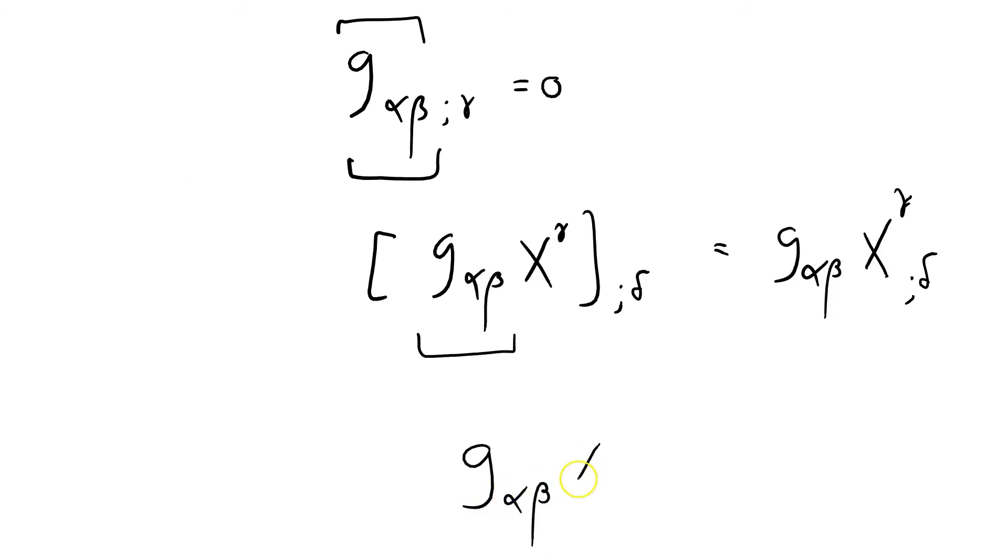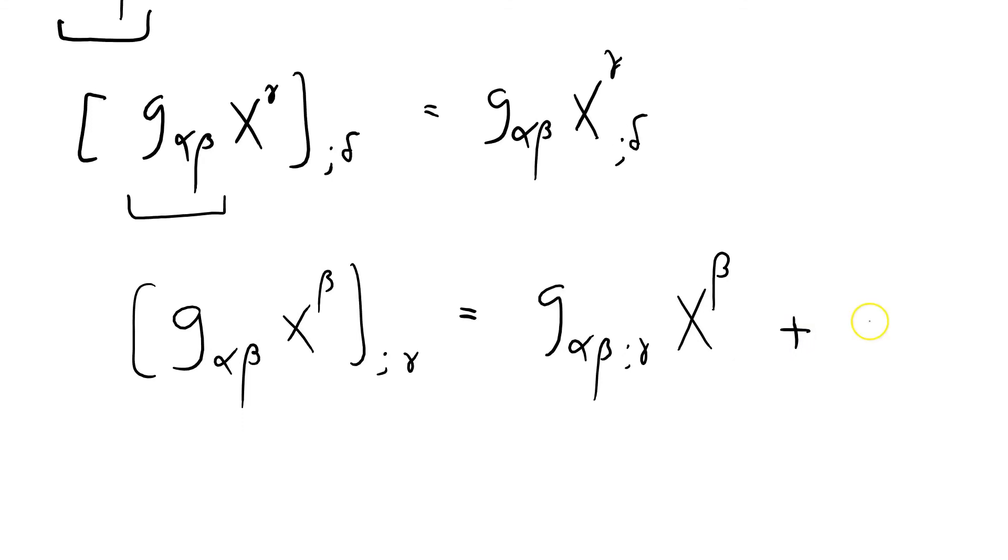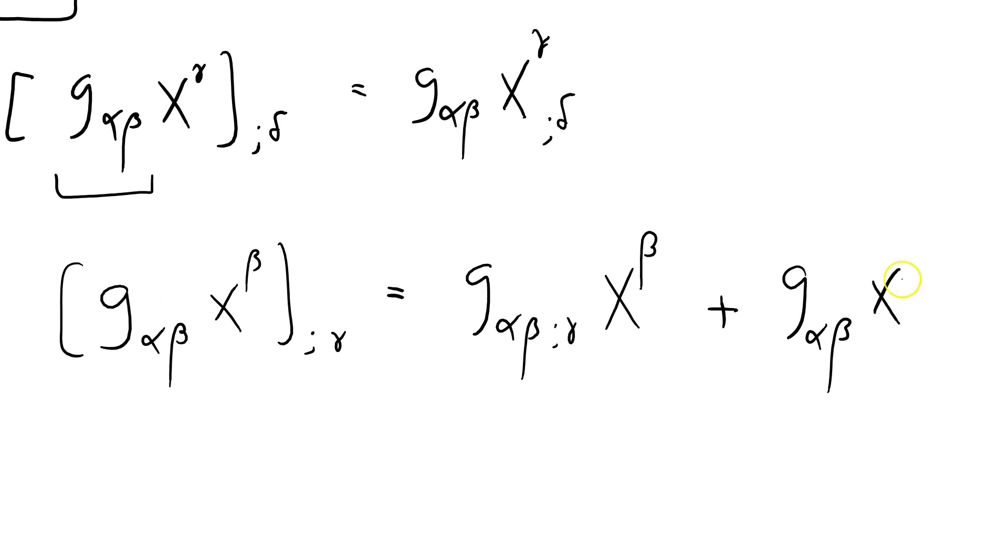G alpha beta X beta, let's say, semicolon gamma equals G alpha beta semicolon gamma X beta plus G alpha beta X beta semicolon gamma. Notice how there's a summation in there and I don't care. Because the summation convention doesn't care about this kind of thing. That's just zero. Why is that zero? Because the covariant derivative of the metric tensor is zero.